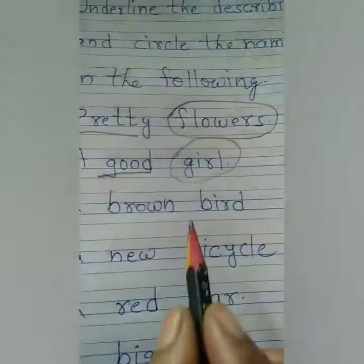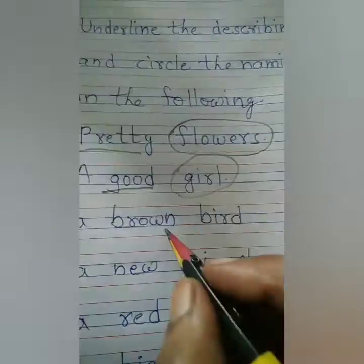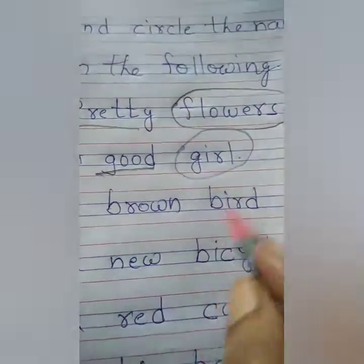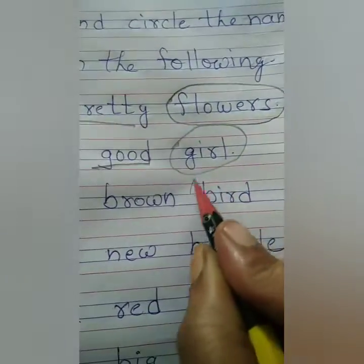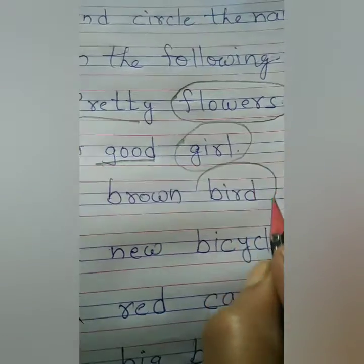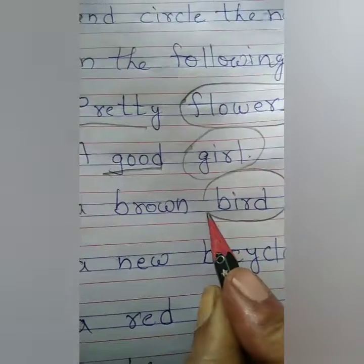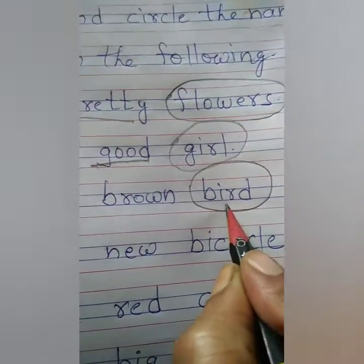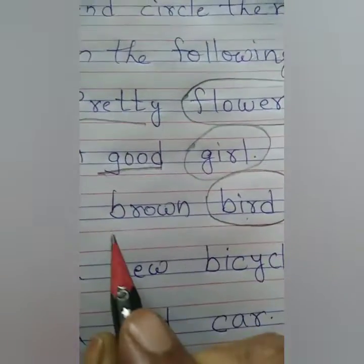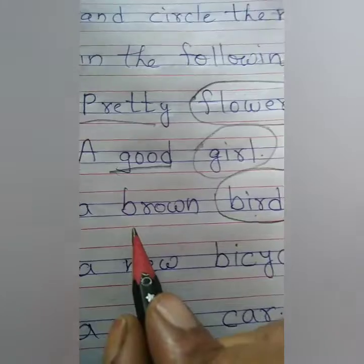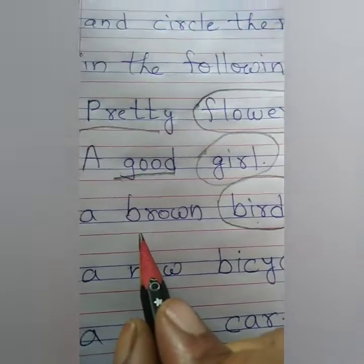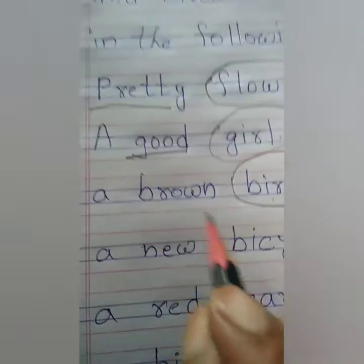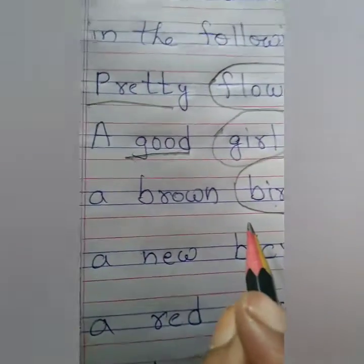A brown bird. We are talking about bird, so bird is our naming word. And how is your bird? It is brown. Brown describes the bird. So bird is the naming word and 'brown' is the describing word.